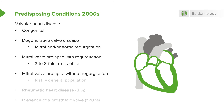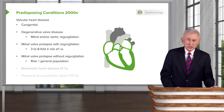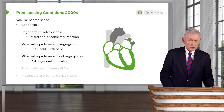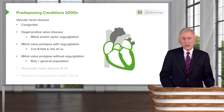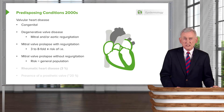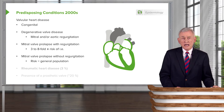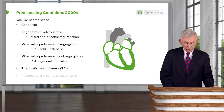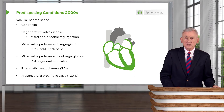Mitral valve prolapse without regurgitation carries about the same risk as the general population. Unless you examine the heart carefully, you may miss someone who has mitral valve prolapse with regurgitation. It may be preceded by a click and then a mid-systolic murmur that is ejection in quality, whereas simple mitral valve prolapse is often heard as a mid-systolic click alone. Rheumatic heart disease still accounts for about 3% of predisposing conditions.